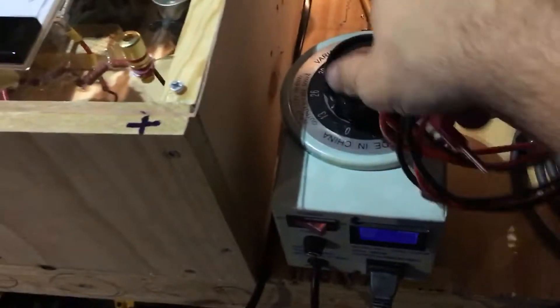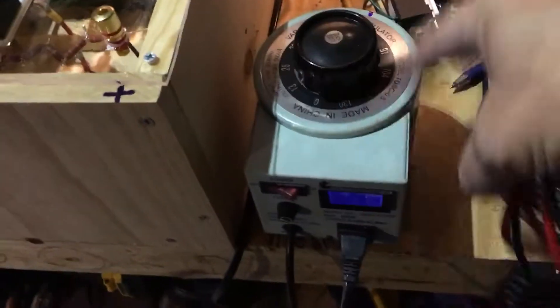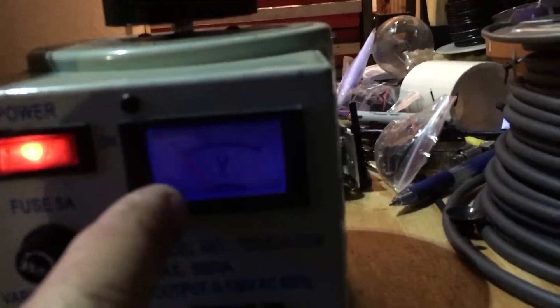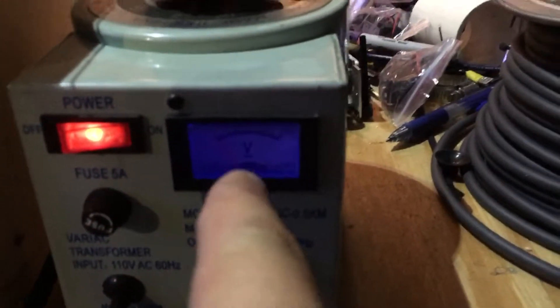Keep the Variac on zero when you turn it on, all the way counterclockwise. Turn it on. You'll be able to get a volts output in here, so it should fiddle with it. All right, the volts goes up.